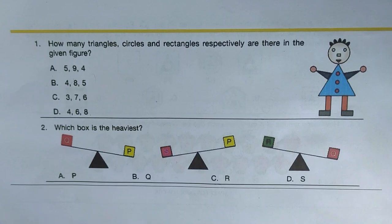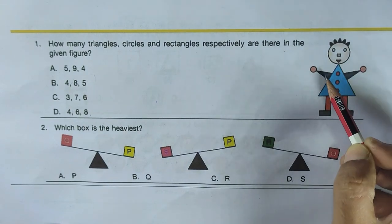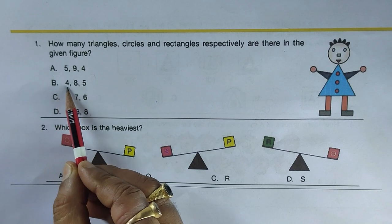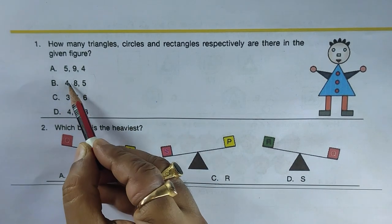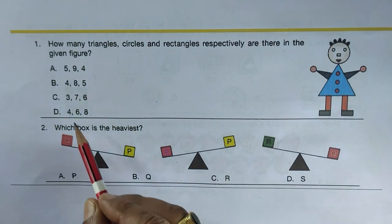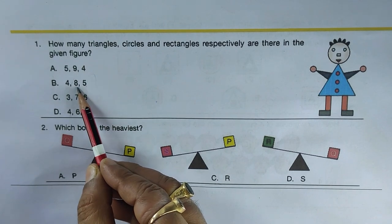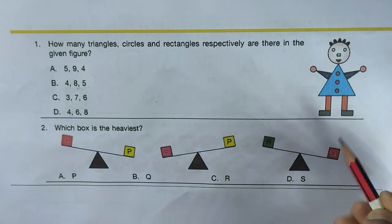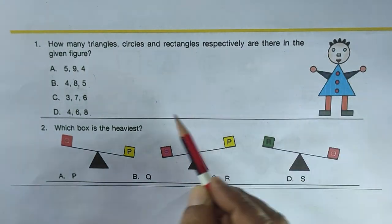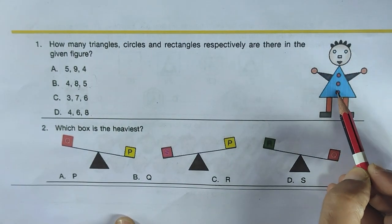Next question: how many triangles, circles, and rectangles respectively are there in the given figure? I count four triangles. Since options B and D both show four triangles, I narrow down by counting rectangles — there are five — and then circles — there are eight. So option B is the right answer.